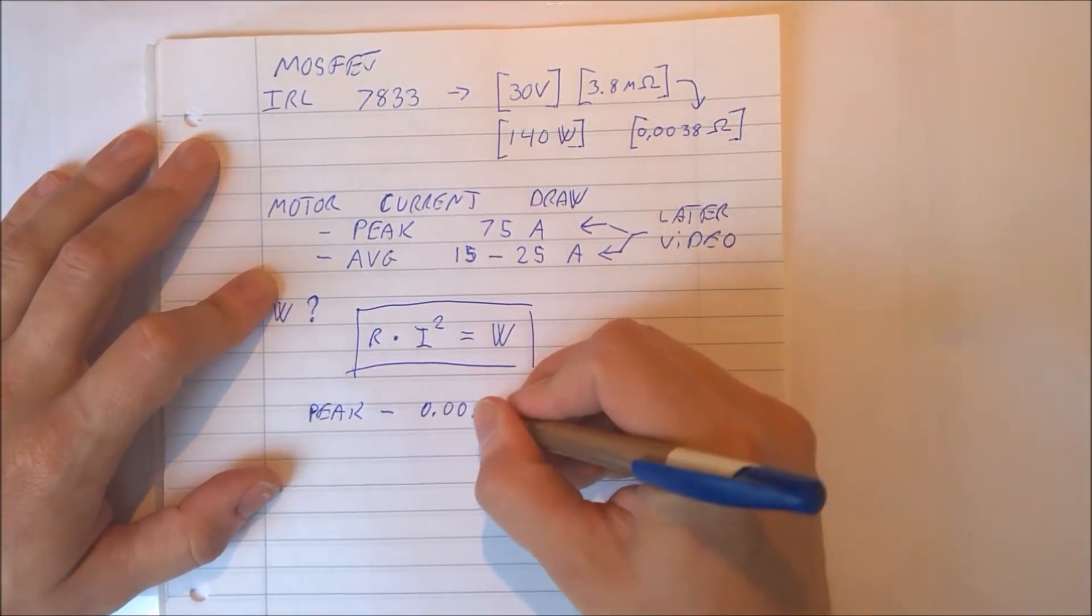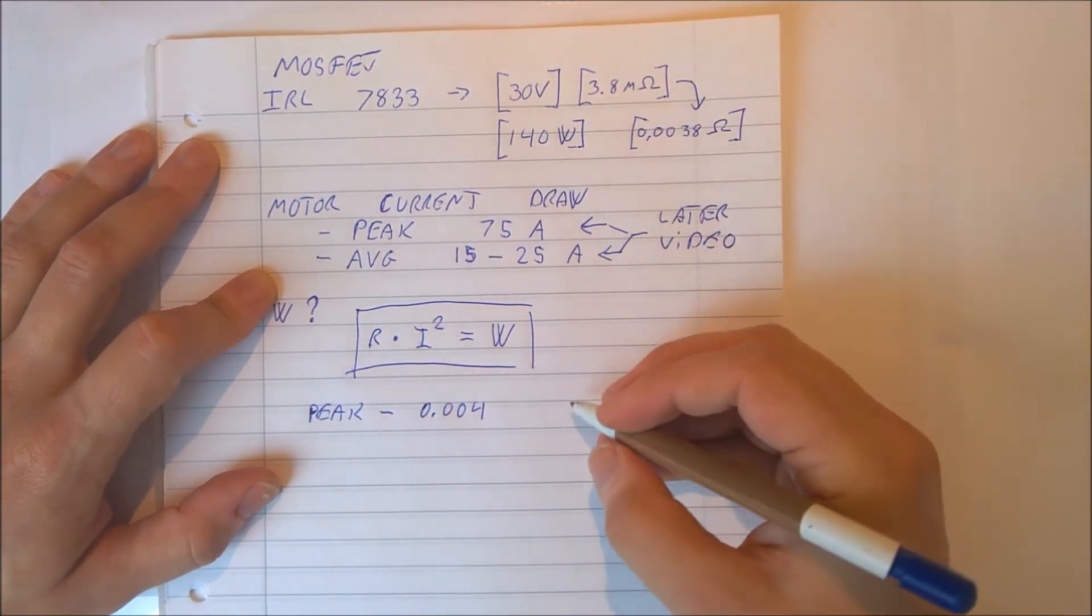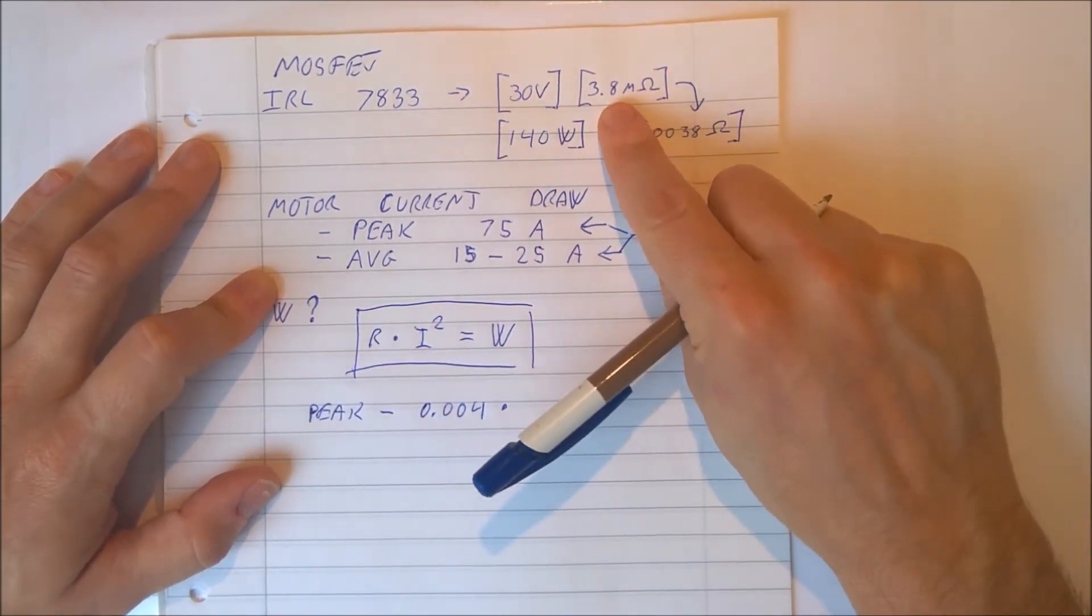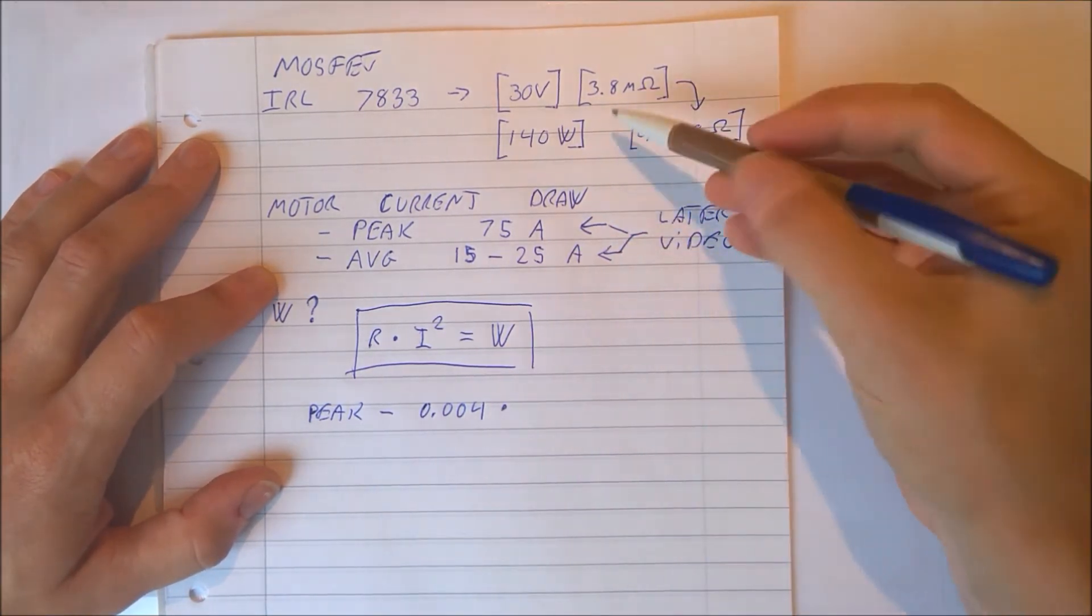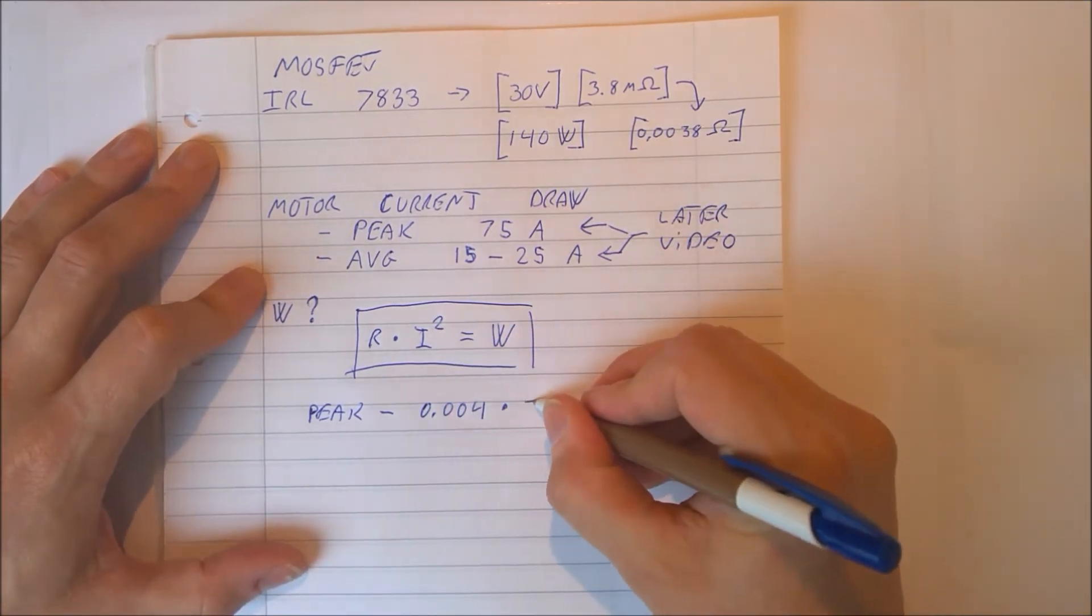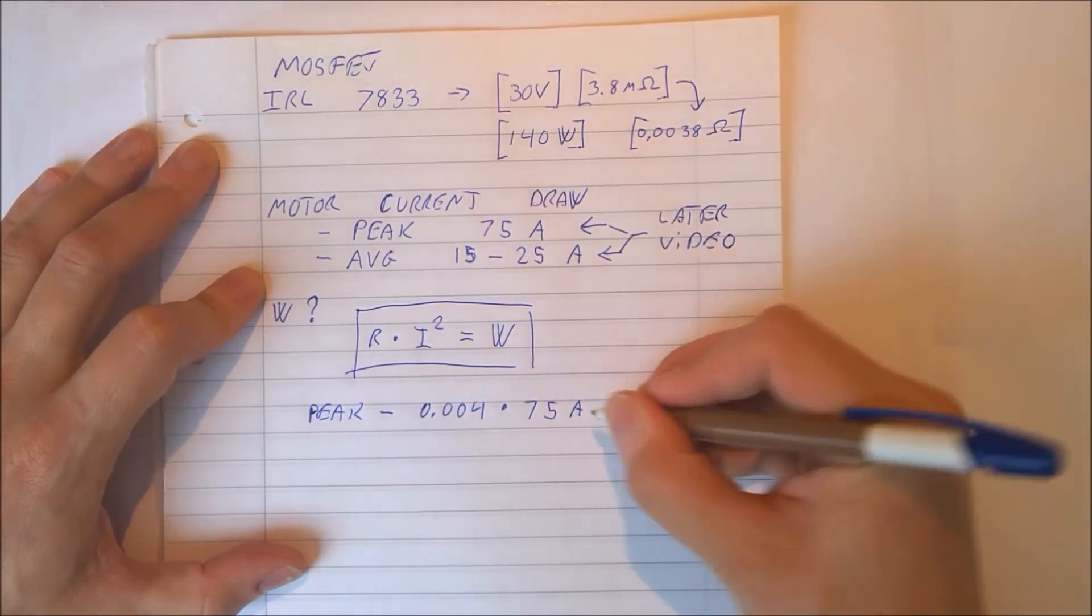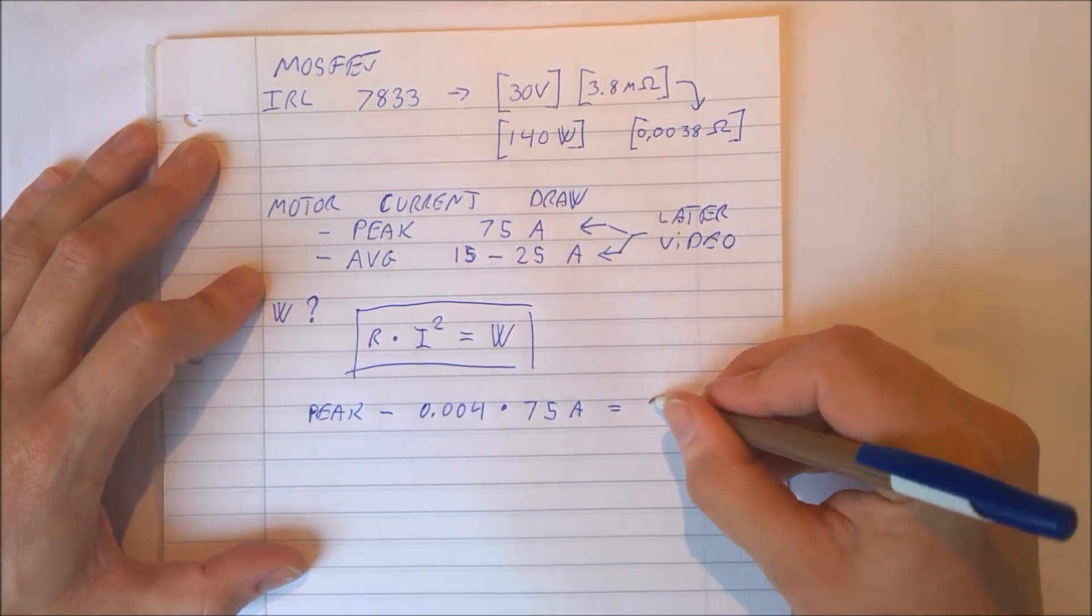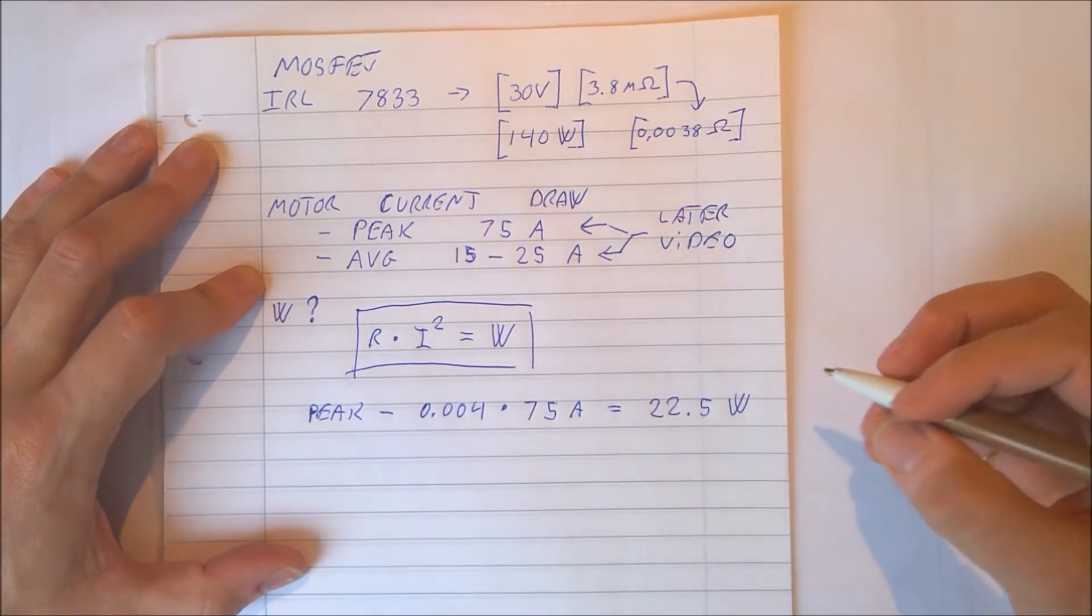Let's round it up to say 0.004 because MOSFET almost never gets to the absolute minimum value. So it's okay to just round up. Times the current of the peak which is 75 amps of current. If I calculate correctly, 22.5 watts of power.